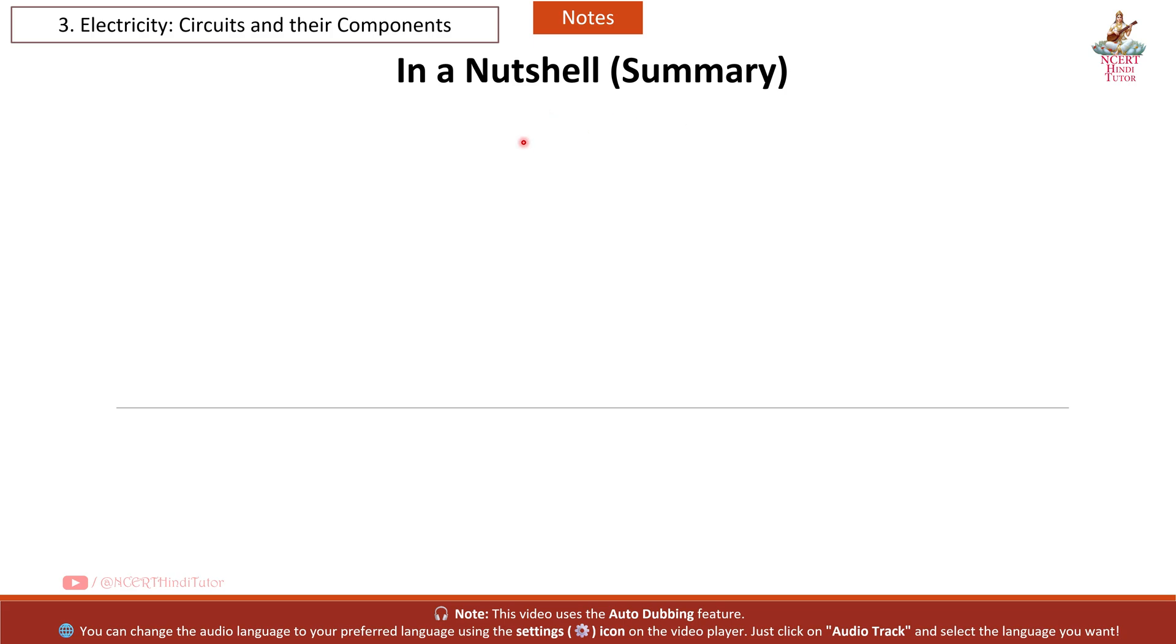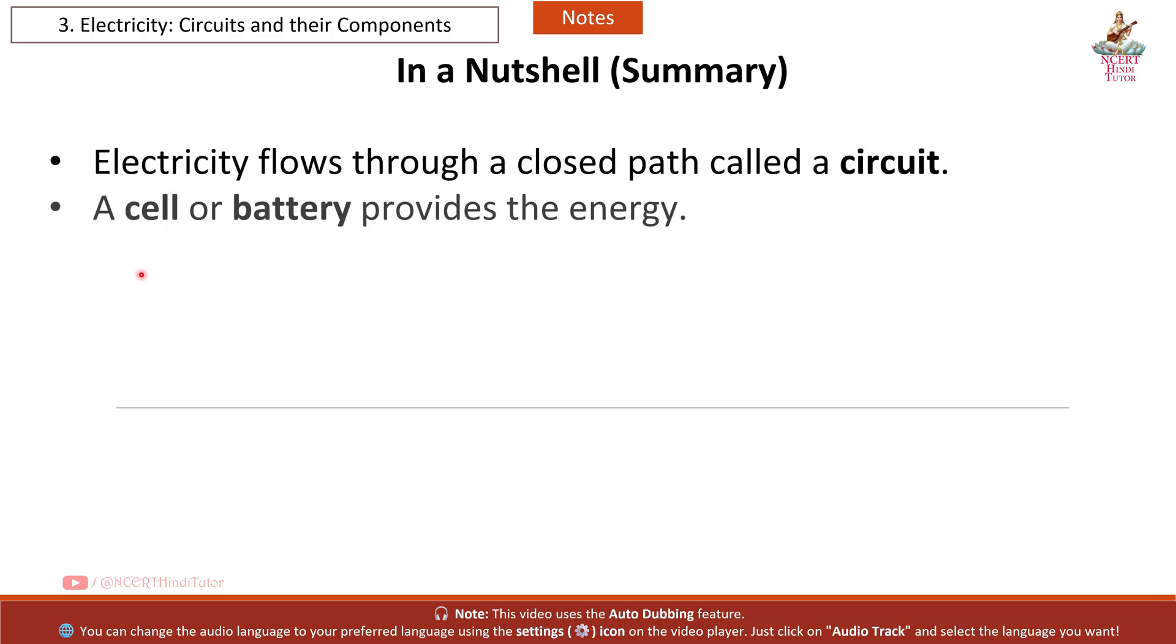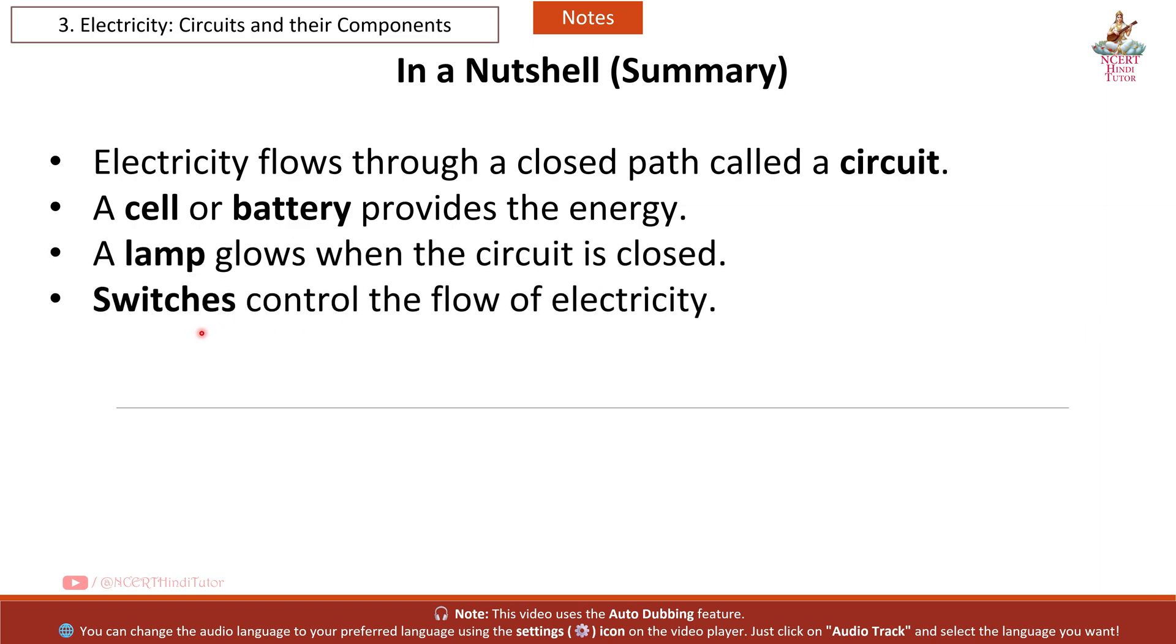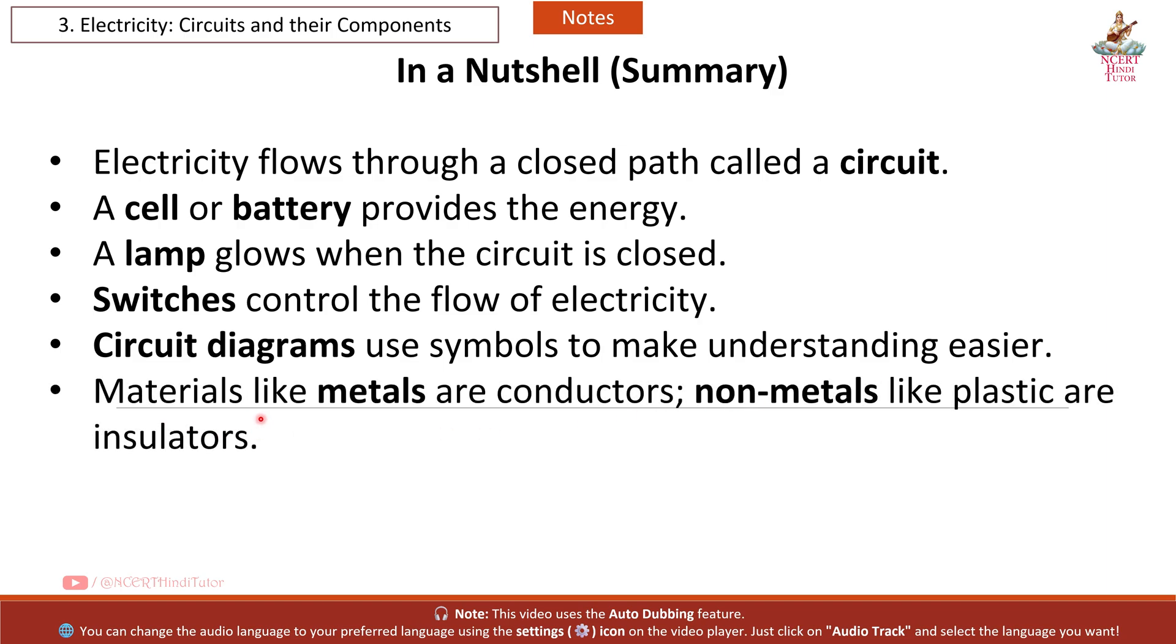In a nutshell, summary. Electricity flows through a closed path called a circuit. A cell or battery provides the energy. A lamp glows when the circuit is closed. Switches control the flow of electricity. Circuit diagrams use symbols to make understanding easier. Materials like metals are conductors. Non-metals like plastic are insulators.